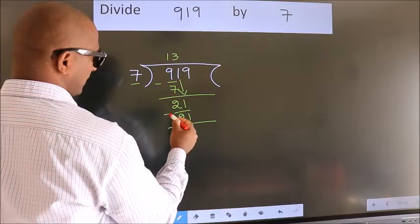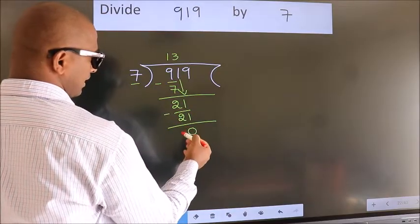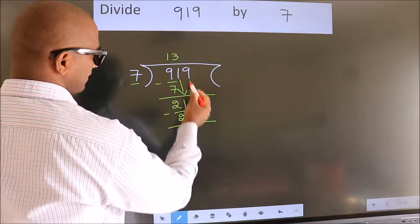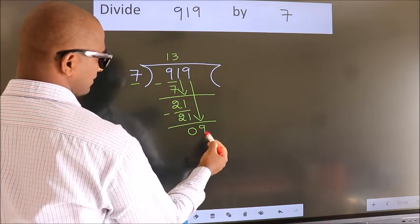Now we subtract. We get 0. After this, bring down the beside number. So 9 down, so 9.